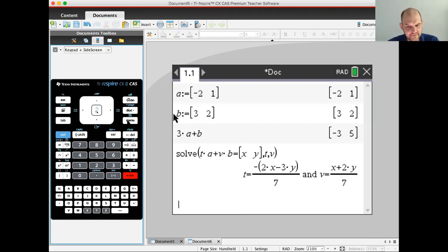I've already figured out that 3A plus B should give me negative 3, 5. And it does. Now I want to do it more generally. So I'm just going to use solve. Menu 3, solve. T times the vector A plus V times the vector B should be equal to the vector XY. And then I need to solve for T and for V. And it should give me things in terms of X and Y. So this is it. I'm going to copy that down. I'm going to say that T has to be equal to 3Y minus 2X over 7. V is X plus 2Y over 7.